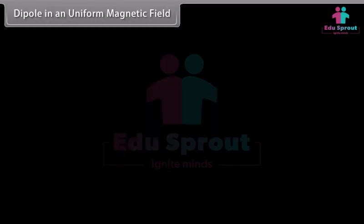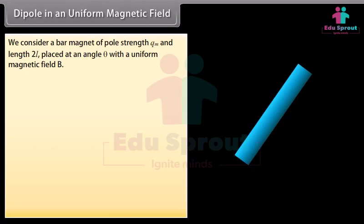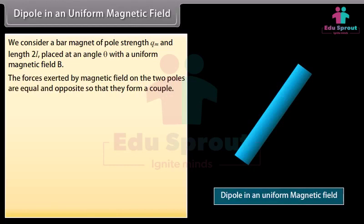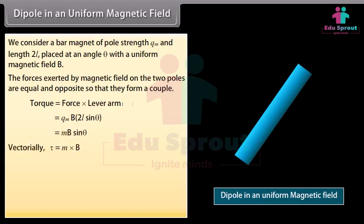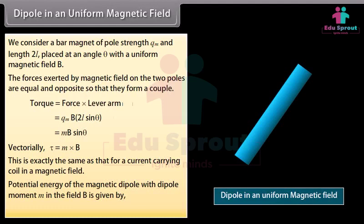Dipole in a uniform magnetic field: We consider a bar magnet of pole strength Qm and length 2L placed at an angle theta with a uniform magnetic field B. The forces exerted by the magnetic field on the two poles are equal and opposite, forming a couple. Torque equals force into lever arm, giving torque equal to MB sin theta. Vectorially, tau is equal to the cross product of M and B, the same as that of a current carrying coil in a magnetic field. The potential energy of the magnetic dipole with dipole moment M in the field B is given by the negative dot product of M and B.